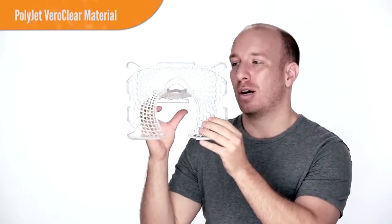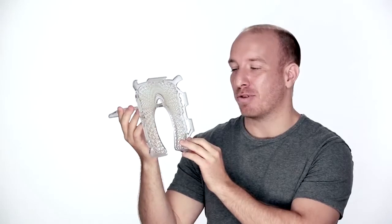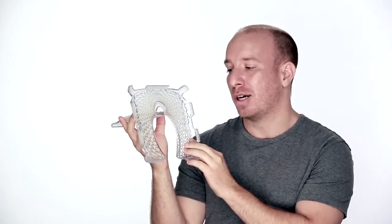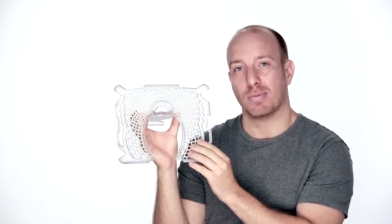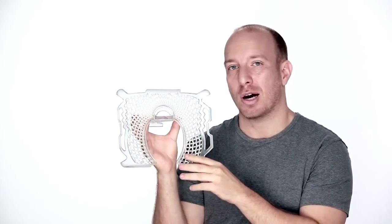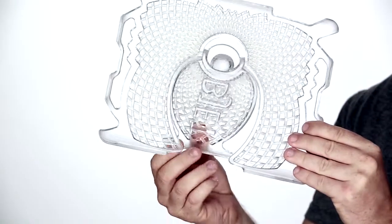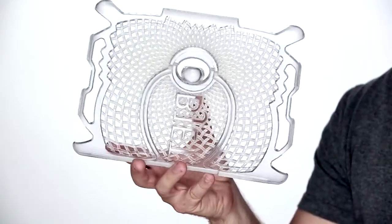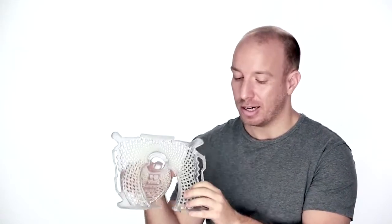First up is the VeroClear material. The VeroClear material is a transparent, clear 3D printing material produced on the PolyJet 3D printers. The Stratasys VeroClear material features excellent dimensional stability for general prototyping purposes and its aesthetic qualities make it particularly suitable for fit and form prototyping when you really need to produce an excellent looking model like this iPad stand right here.